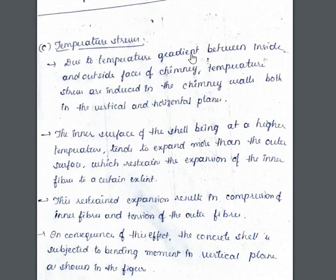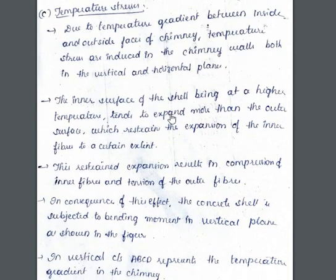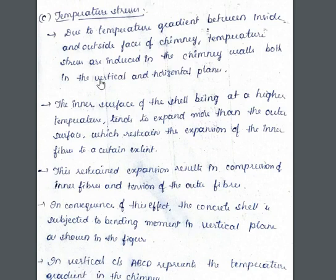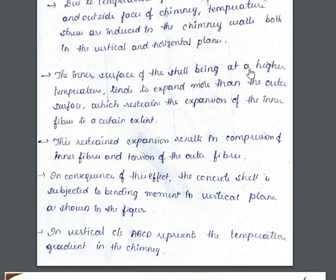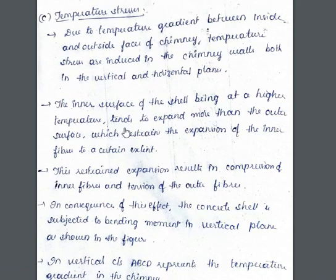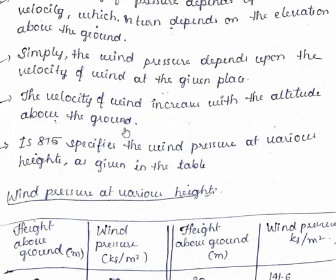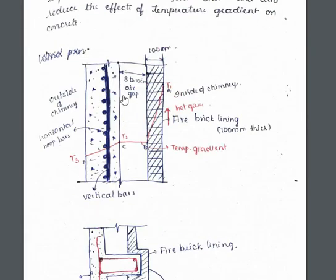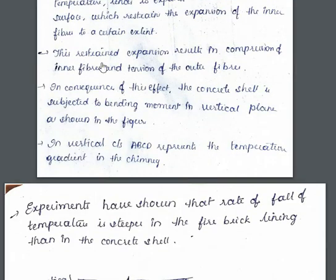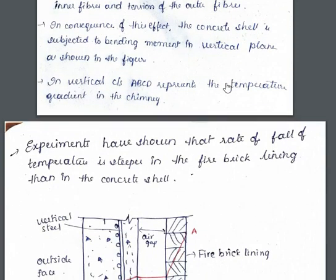Temperature stresses are induced in the chimney walls both in the vertical and horizontal planes due to the temperature gradient between inside and outside faces. The inner surface of the shell, being at higher temperature, tends to expand more than the outer surface. The air gap allows for this expansion. The restrained expansion results in compression of the inner fibers and tension at the outer fibers.